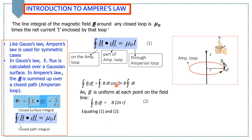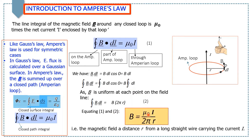Since cos(0°) equals 1, and the magnetic field is uniform at each point on the field line, we keep B outside of the integral. The closed integral of dL means integrating each element around the whole circle, which gives the circumference 2πr. Now equating equation 1 with equation 2, we get B equals mu naught I over 2πr. This shows that the magnetic field at a distance r from a long straight wire carrying current I is B equals mu naught I over 2πr.